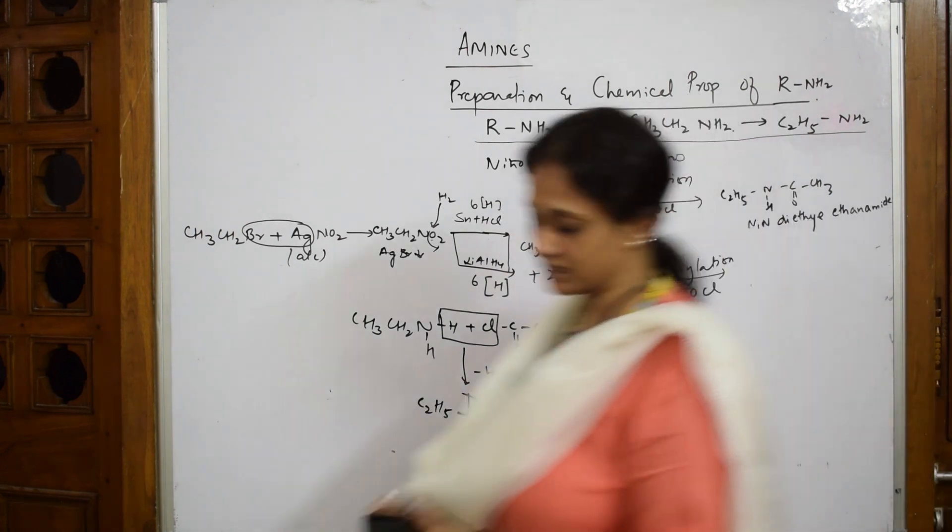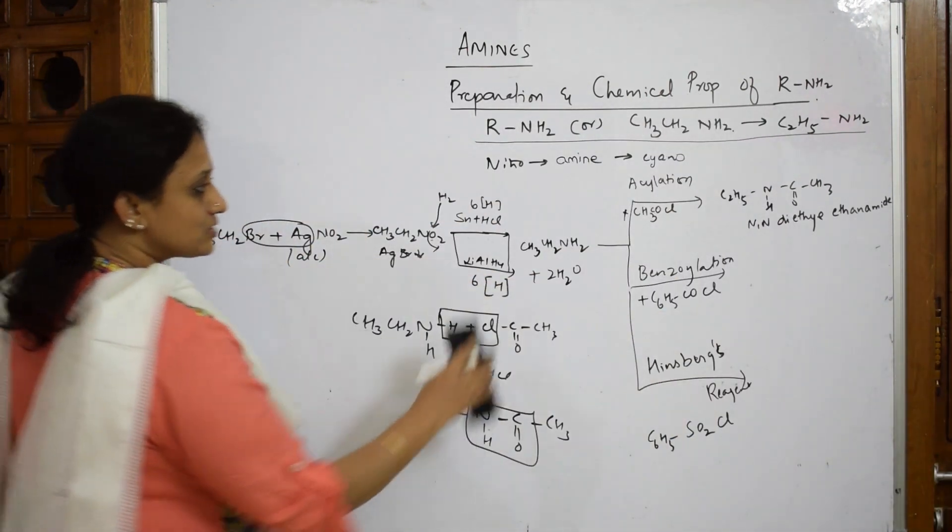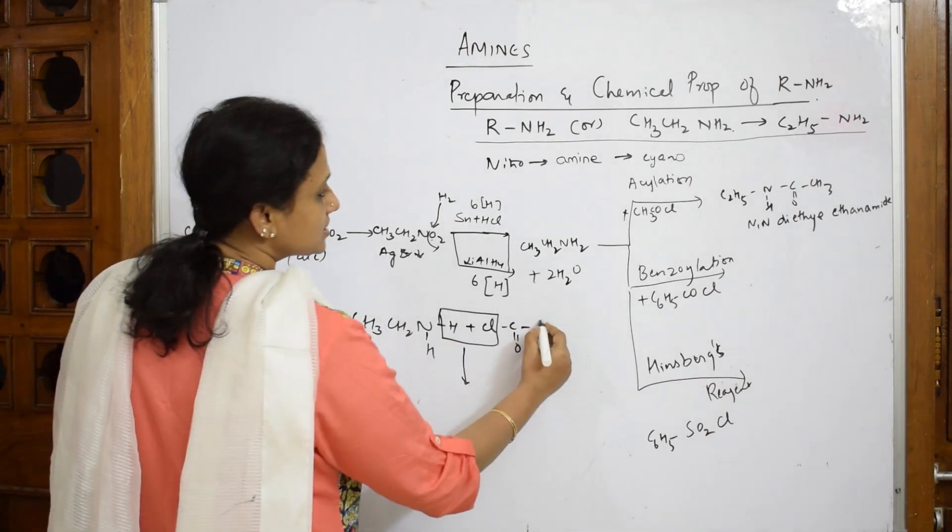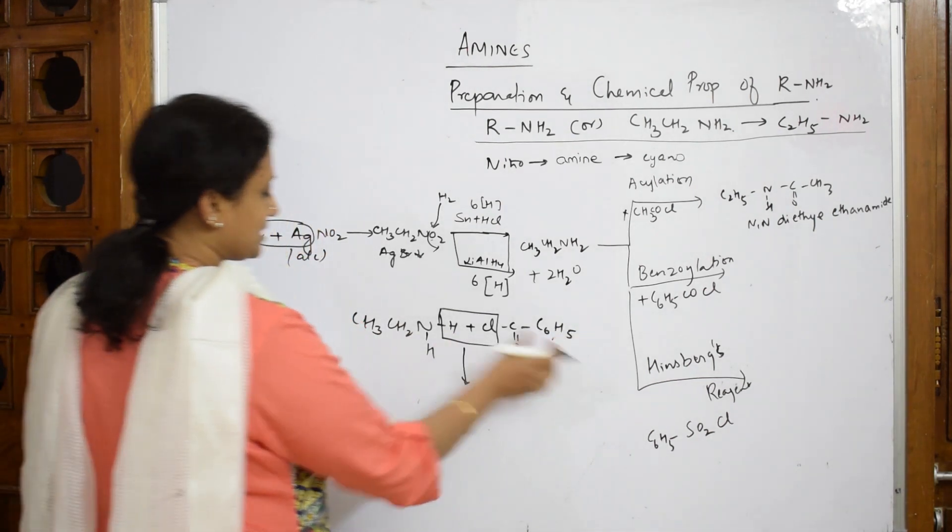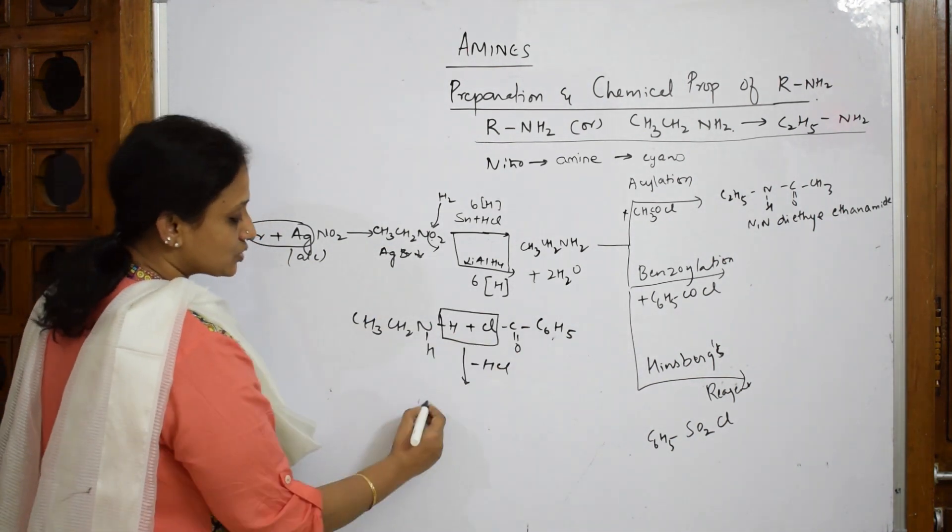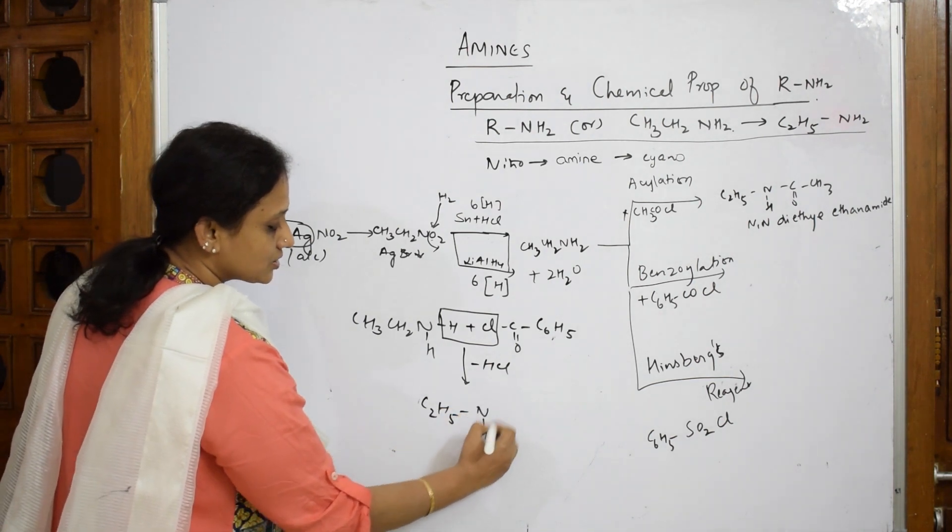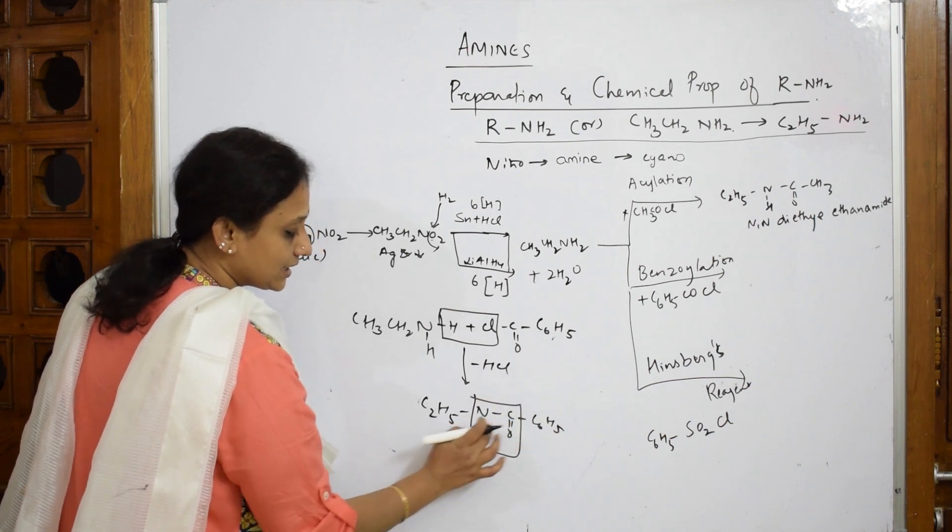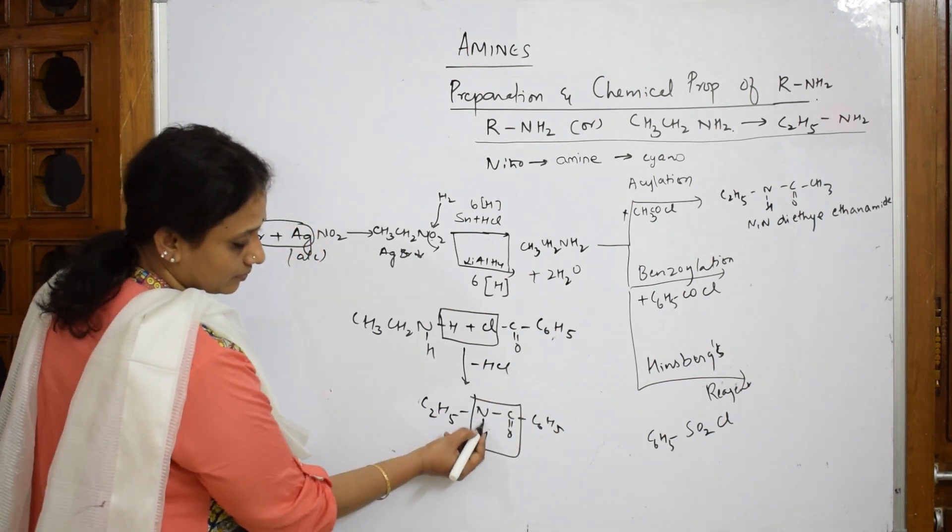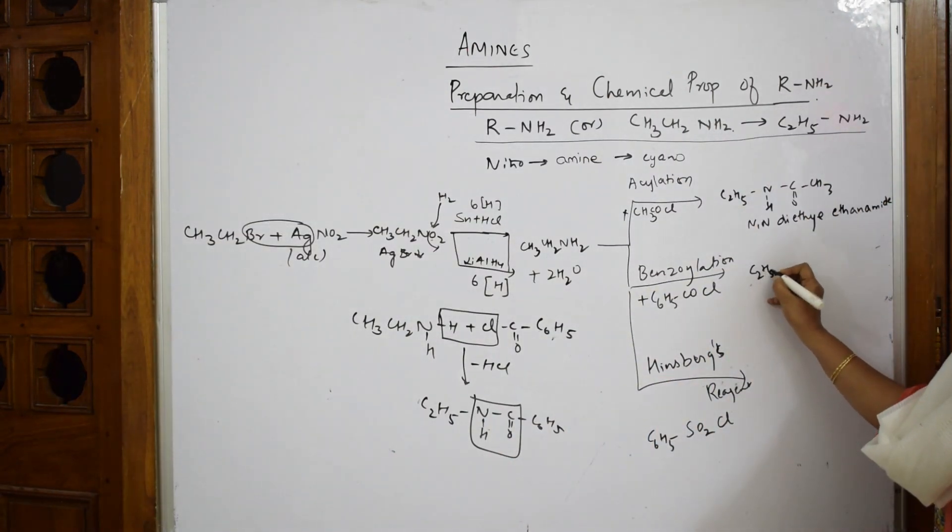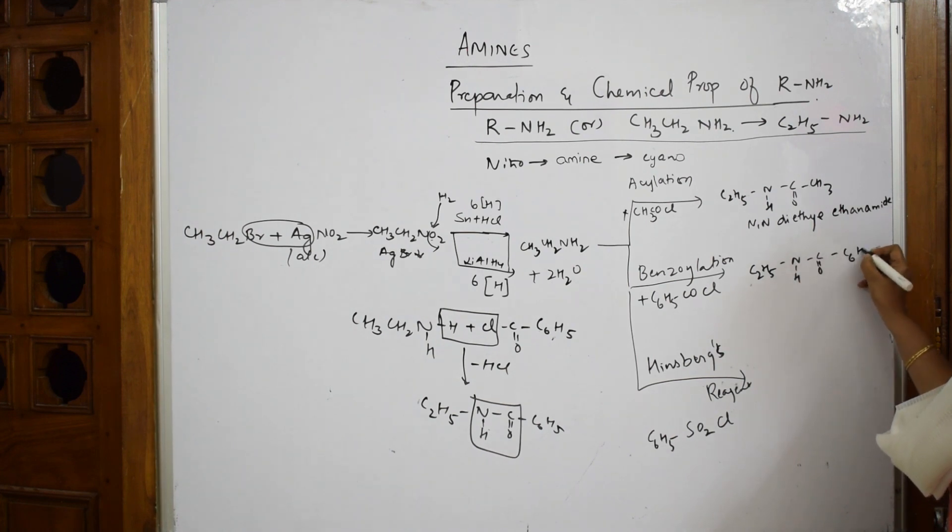Now let us do benzoylation. Same procedure. In benzoylation, what is the difference? Here you have your benzene ring, C6H5, your benzene ring. Same procedure - minus HCl, join these two. C2H5, NH, C double bond O, C6H5. Amide linkage, yes. Let us write the product here: C2H5NHCOC6H5.